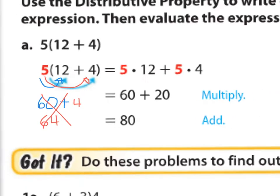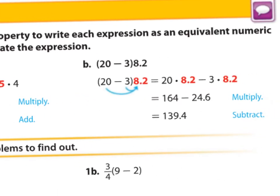You can do the same for subtraction, and here we're using a rational number. 8.2 times 3 is 24.6, and 8.2 times 20 is 164. Once you get those values, you subtract them to find the difference, and there's your answer.